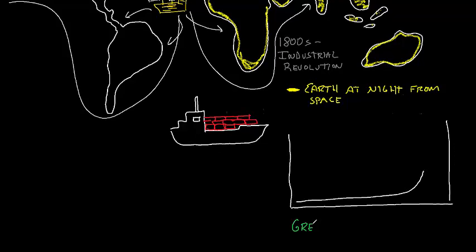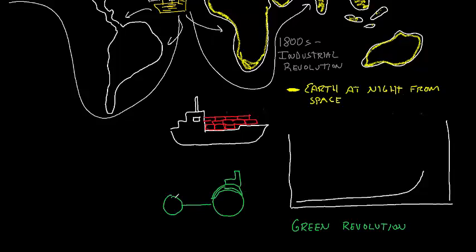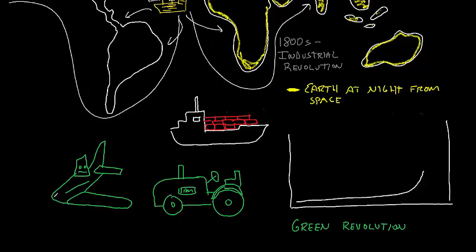This really can be seen in the mid-20th century, as we began the Green Revolution. This is not referring to environmentalism, but instead to the greening of the planet with crops by the using of fossil fuels to run machinery and